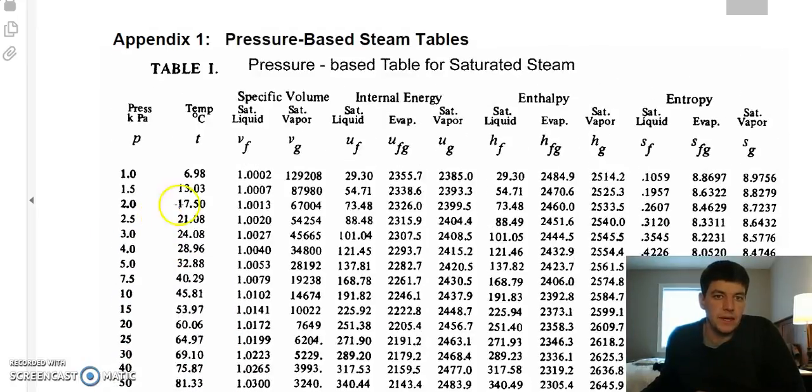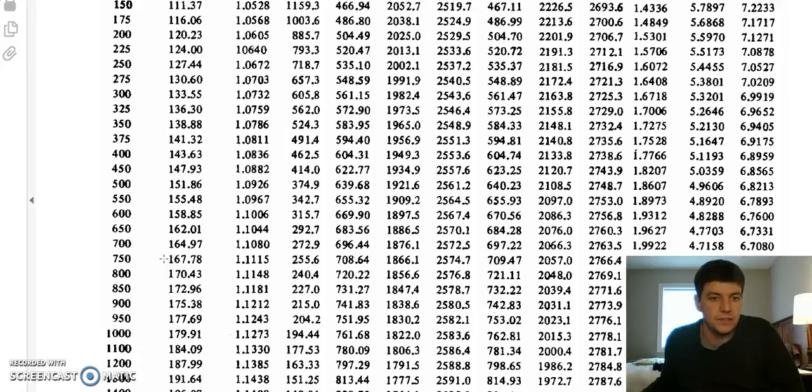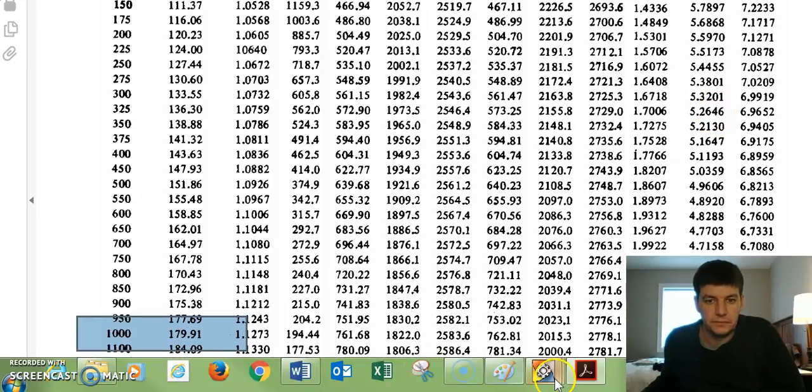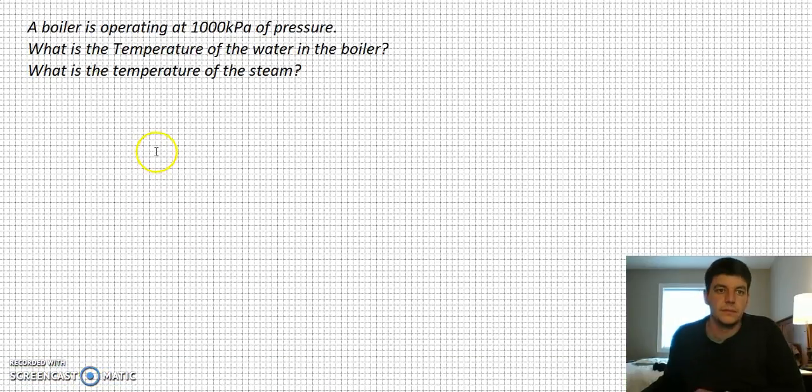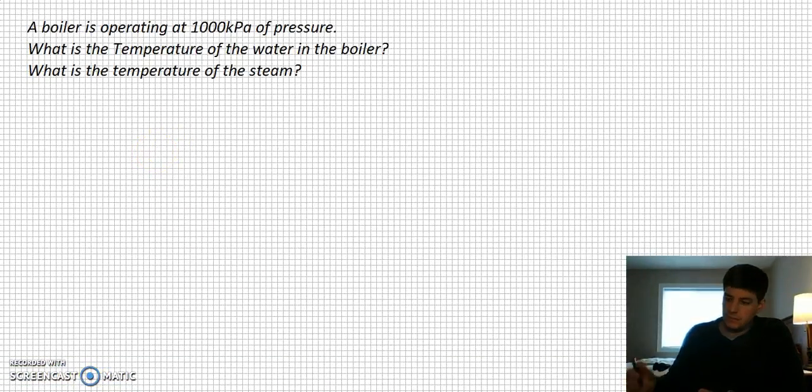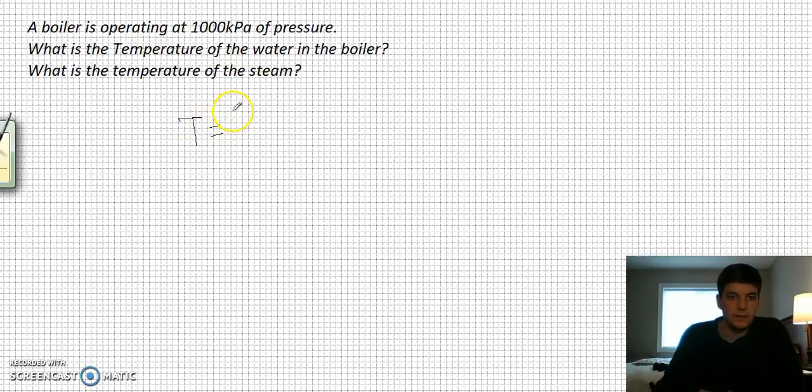We're going to go to our table 1 which is our pressure-based table, and we're going to scroll down our pressure until we get to a pressure of a thousand kPa. What it tells me is that I have a temperature of 179.91 degrees Celsius.